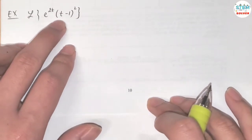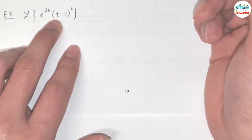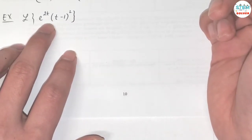Find the Laplace transform of e to the 2t times t minus 1 squared. So first of all, you cannot find the Laplace transform over a product.